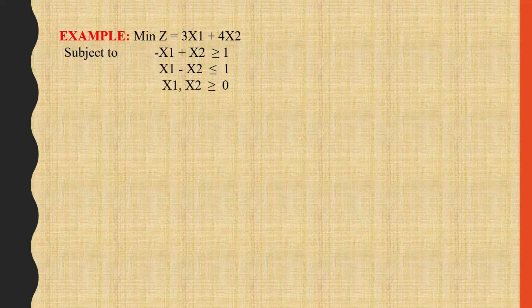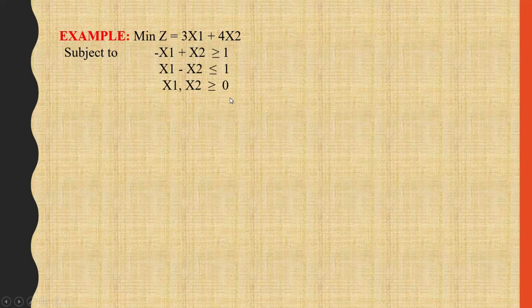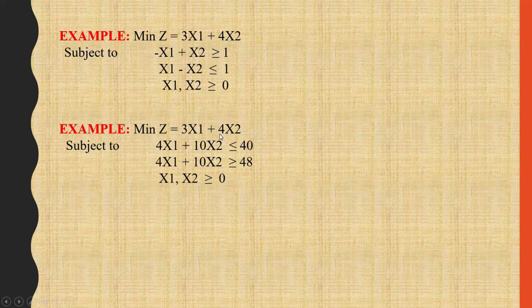Let's see other examples. First: Minimize Z = 3x1 + 4x2 subject to -x1 + x2 ≥ 1, x1 - x2 ≤ 1, and x1, x2 ≥ 0 — this is also an infeasible solution. Second example: Minimize Z = 3x1 + 4x2 subject to 4x1 + 10x2 ≤ 40 and 4x1 + 10x2 ≥ 40, with x1, x2 ≥ 0. This is a simpler example you can easily solve.